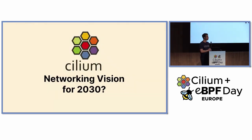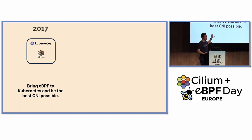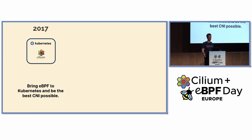Let's look ahead a little bit — where do we want to be? We've achieved quite a lot from what we originally set ourselves up for. In 2017 we were of course not thinking about AI, so let's set that aside. The 2017 mission was very simple: bring eBPF to Kubernetes and become the best possible CNI. That was essentially the mission and vision we're still driving toward.